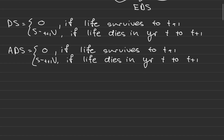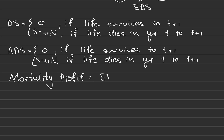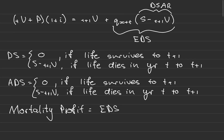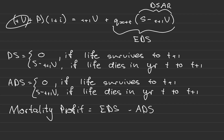Mortality profit for an individual policy — and I emphasize individual policy — equals the expected death strain minus the actual death strain. Note that mortality profit is not the same as financial profit. Also, an important reminder: when calculating death strain at risk, always use the reserve at the end of the year, not the beginning. This is a very easy mistake to make.